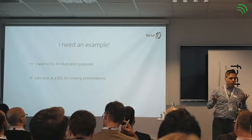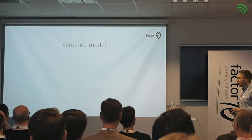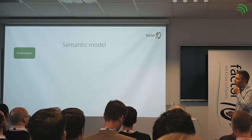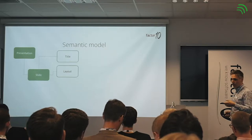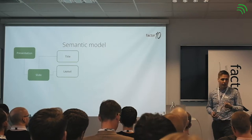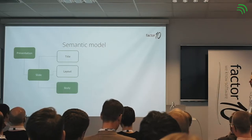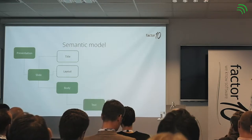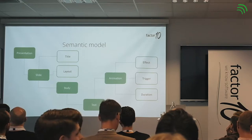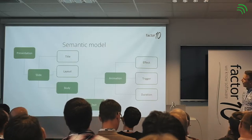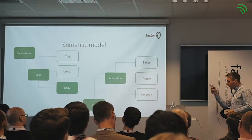Behind the domain-specific language, you need something called a semantic model — a model that the domain-specific language maps to. For my presentation DSL, I want a model where I have the concept of a presentation. A presentation contains slides, and each slide has a title and a layout — meaning which master slide does it use: is it a title slide, a bullet-and-heading layout, or something else? The slide also has a body consisting of text. And most importantly, we need animations — because otherwise it's not a real presentation. An animation can have an effect like fly-in, appear, or swivel; a trigger such as click; and a duration.